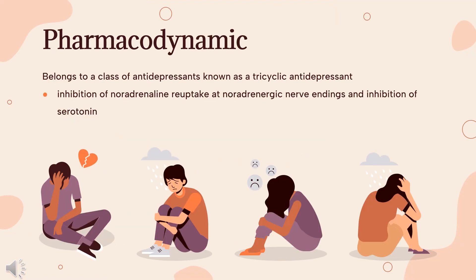Pharmacodynamics. Desipramine, a secondary amine tricyclic antidepressant, is structurally related to both the skeletal muscle relaxant cyclobenzaprine and the thioxanthene antipsychotics such as thiothixene. It is the active metabolite of imipramine, a tertiary amine TCA. The acute effects of desipramine include inhibition of noradrenaline reuptake at noradrenergic nerve endings and inhibition of serotonin (5-hydroxytryptamine, 5-HT) reuptake at serotonergic nerve endings in the central nervous system.